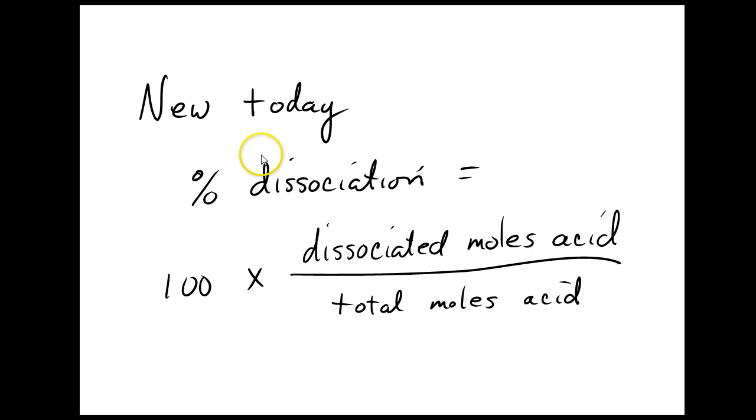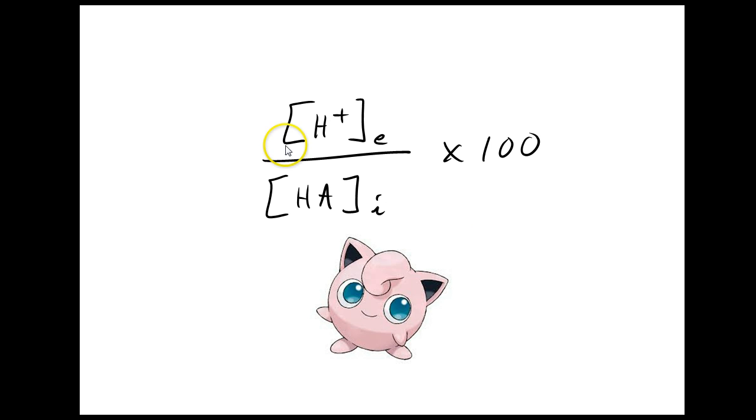Our new topic today is super easy. It's called percent dissociation. Just another way of measuring how strong an acid is. It's just how it sounds. It's the amount of acid that dissociated, divided by the total amount of acid, times 100, to change it into a percent. In terms of our usual icebox concentrations, that will be our H+ at equilibrium, divided by our HA, our weak acid concentration that we had initially, times 100.